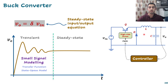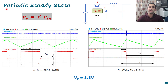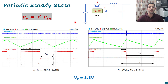I will go through more details about the buck converter, because the same information will be applicable for other converters in the future. This slide shows something called periodic steady state. As previously mentioned, we have a steady state in DC circuits and also in switched DC circuits. In a switched DC circuit, we have a periodic steady state where the average voltage of the inductor equals zero and the average current in the capacitor equals zero.